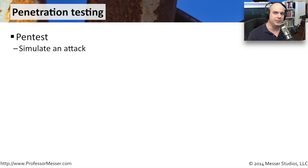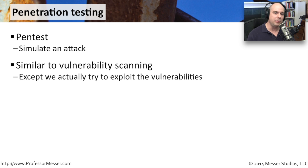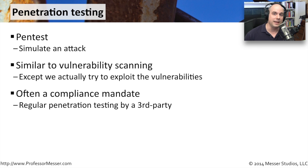If we're performing a penetration test on our network, we are going to be actively attacking the systems that are out there. You'll sometimes hear this referred to as pen testing. This is a little bit different than vulnerability scanning. When we were doing vulnerability scanning, we were being relatively passive — we weren't really attacking systems directly. If we're trying to get into a system and really see if we can take advantage of its vulnerabilities, we call that penetration testing. If we're able to get in and see what the bad guys can do, then we can test and be sure we're putting the right security in place.